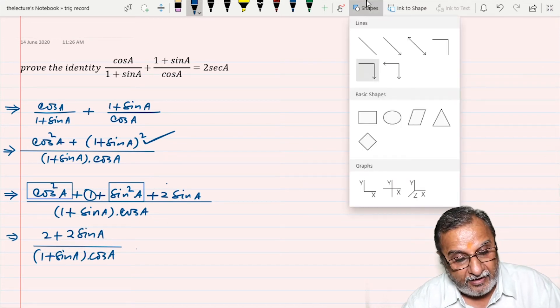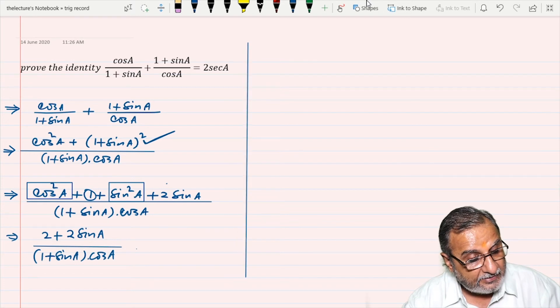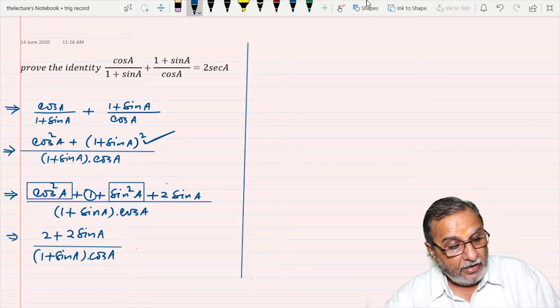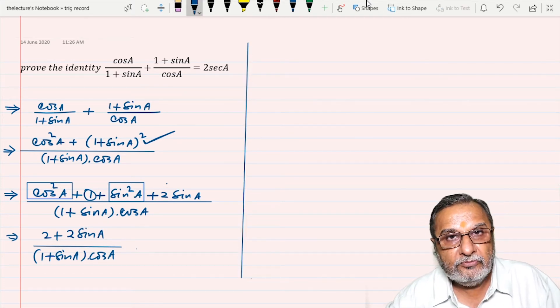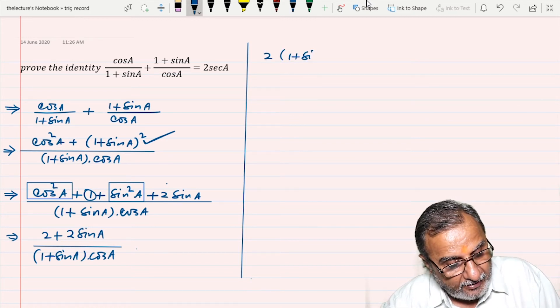Now we are at the final stage of the proof, and I have taken common 2 from the numerator, and I got 1 + sin A.